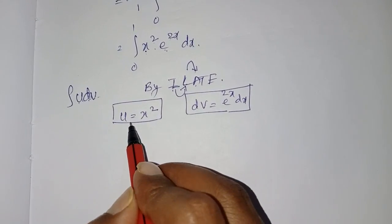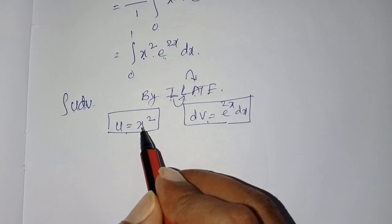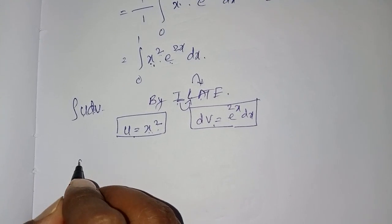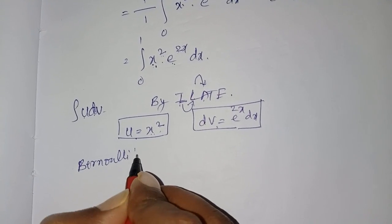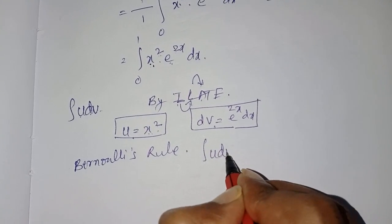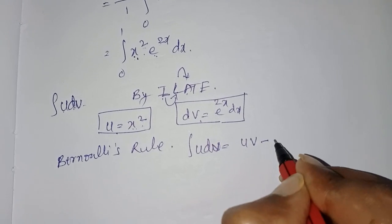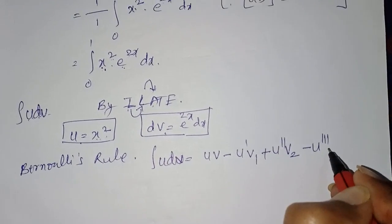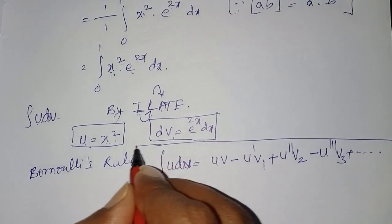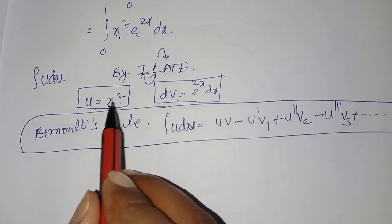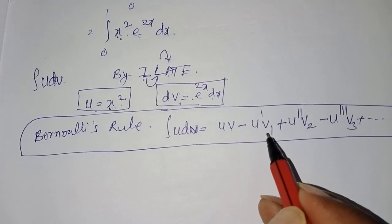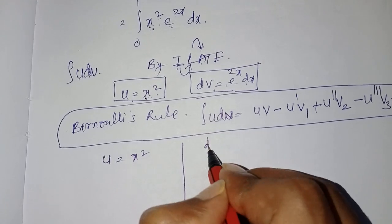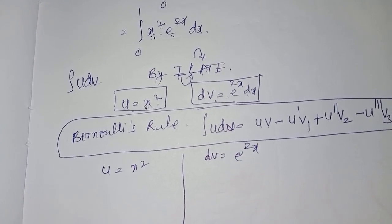Since u = x² has power 2 (greater than 1), we use Bernoulli's rule. Bernoulli's rule states: ∫u dv = u·v − u'·v₁ + u''·v₂ − u'''·v₃ + ... We have u = x² and dv = e^(2x)dx. Now we need to find v, u', u'', v₁, and v₂.